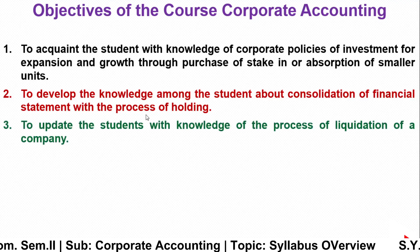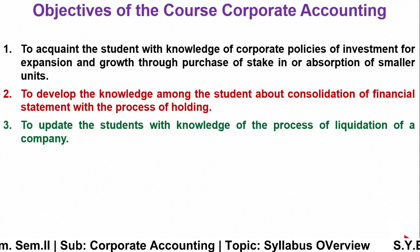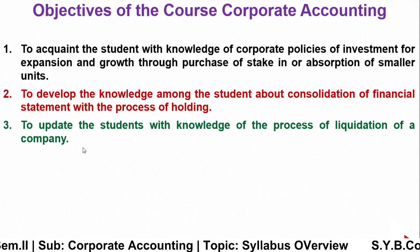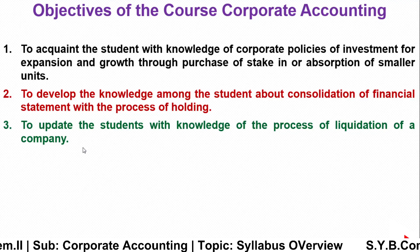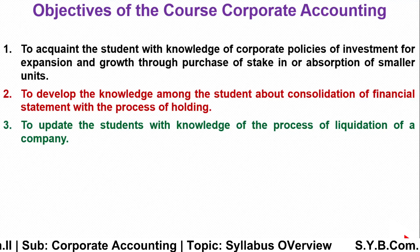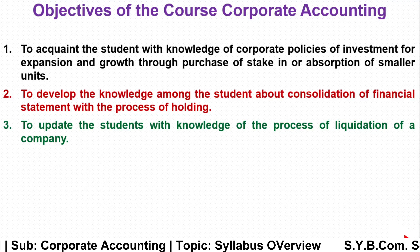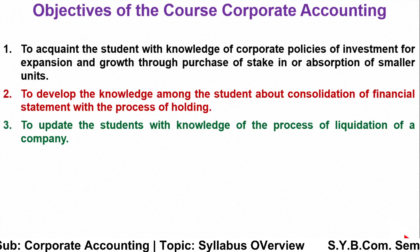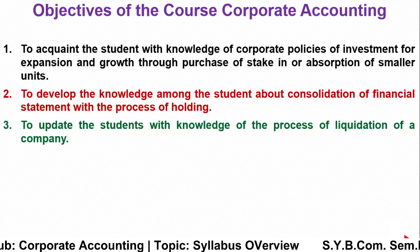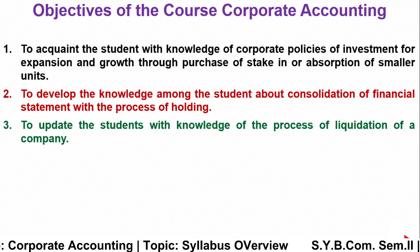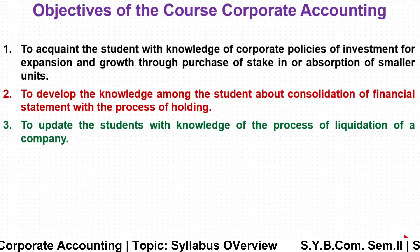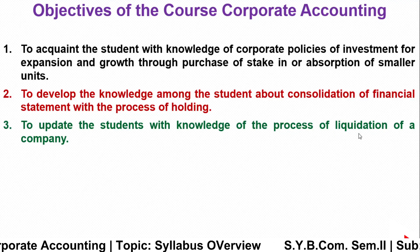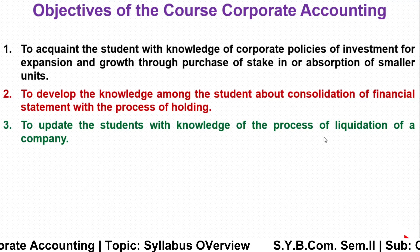The third objective is to update students with the knowledge of the process of liquidation of a company. We are going to study the topic of liquidation — if any company goes into liquidation, what kind of adjustments have to be done, and to whom the money has to be paid. That process is called liquidation of a company.